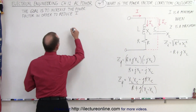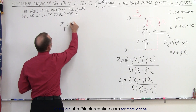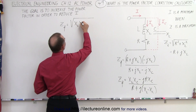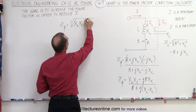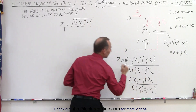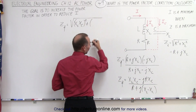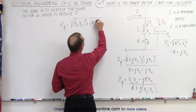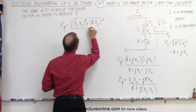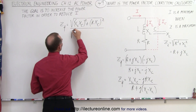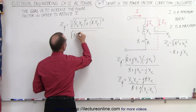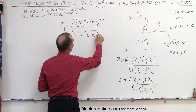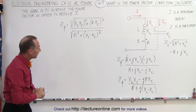So Z_final equals the square root of (X_L · X_C) squared plus (R · X_C) squared — the imaginary component squared becomes positive when squared — all divided by the square root of R squared plus the quantity (X_L minus X_C) squared.